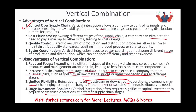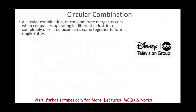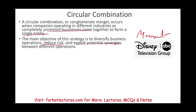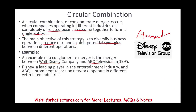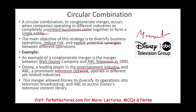Circular combination, or conglomerate merger, occurs when companies operating in different or completely unrelated industries come together to form a single entity under one management. The main objective is to diversify business operations, reduce risk, and exploit potential synergies. A classic example is the merger of Walt Disney and ABC Television in 1995 — Disney was a leading entertainment company and ABC was a television network operating in different yet related industries. The merger allowed Disney to diversify into television broadcast, and ABC to access Disney's extensive content library.